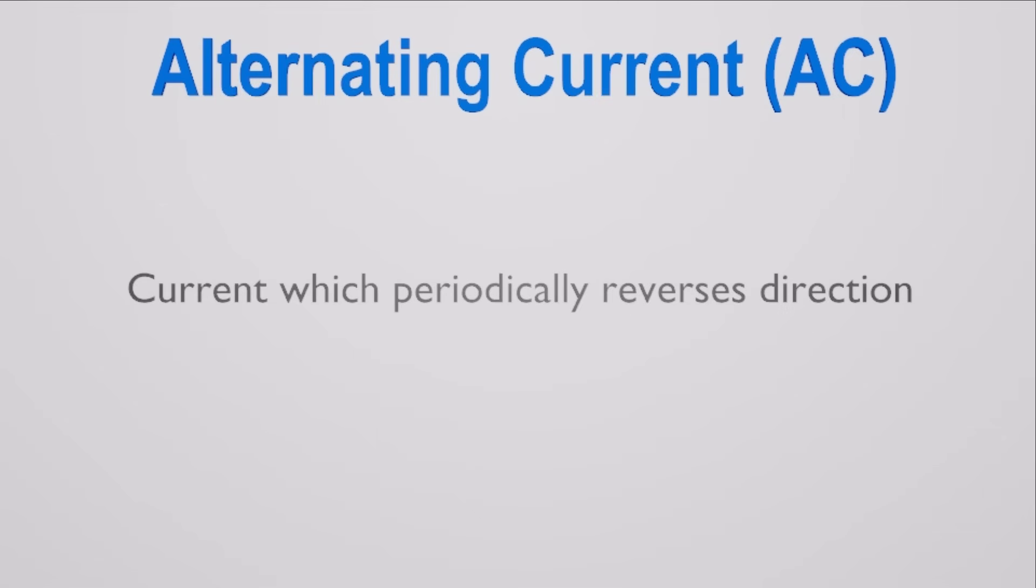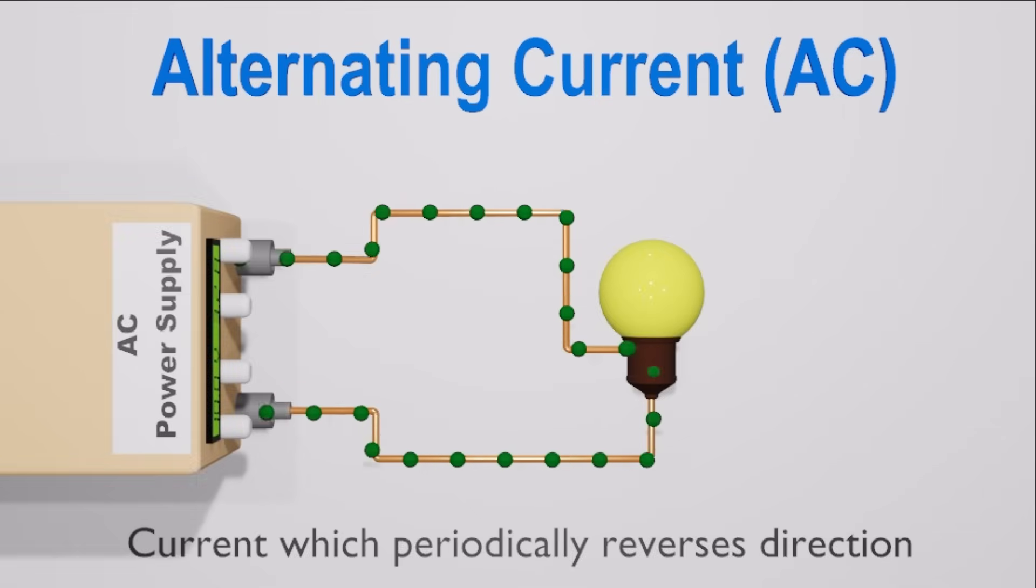How does AC work? Alternating current, AC, is an electric current which periodically reverses direction and changes its magnitude continuously with time.